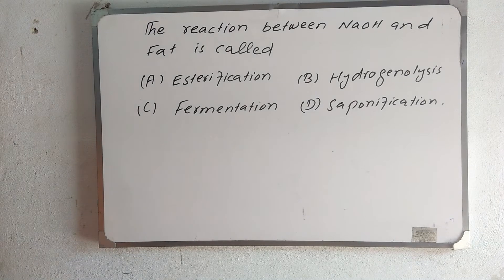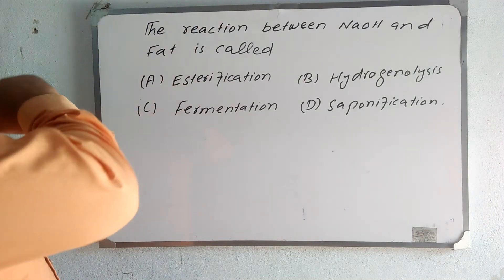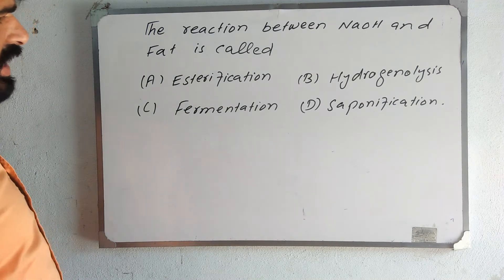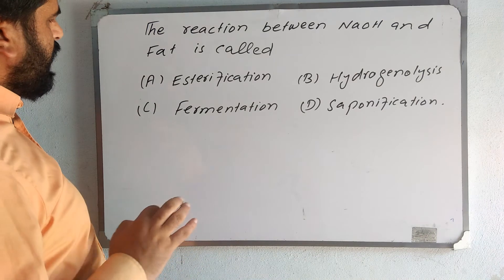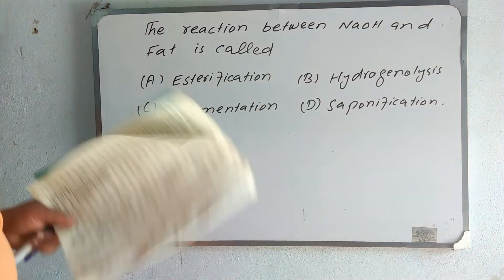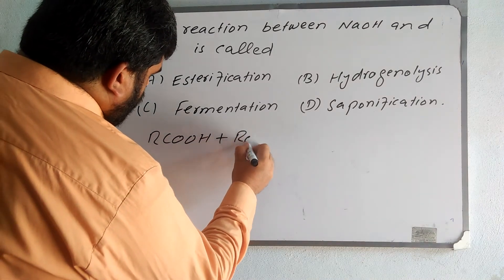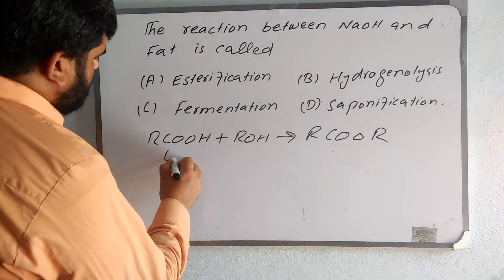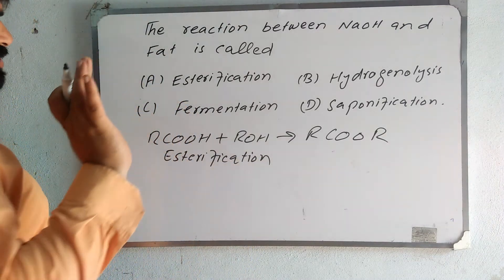The next MCQ is: the reaction between sodium hydroxide and fat is called — option A, esterification; option B, hydrogenolysis; option C, fermentation; option D, saponification. Esterification is when we add an organic acid with alcohol to form an ester group: R-C(=O)-OH plus R-OH gives R-C(=O)-OR. That is called esterification, so that option is not correct.